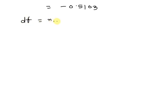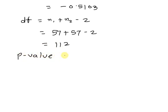Degrees of freedom equals n1 plus n2 minus 2, which equals 57 plus 57 minus 2, equals 112. And the corresponding p-value equals 0.3055.